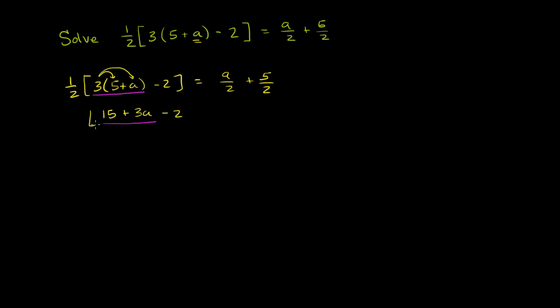Minus 2, and then times that whole thing times 1 half is equal to, and I could also simplify this right hand side. I have the same denominator, so a over 2 plus 5 over 2 is a plus 5 over 2. If I simplify inside the brackets, I have 15 minus 2, so that'll simplify to positive 13. So I get 3a plus 13, and that whole thing is going to be multiplied by 1 half. That's equal to a plus 5 over 2.